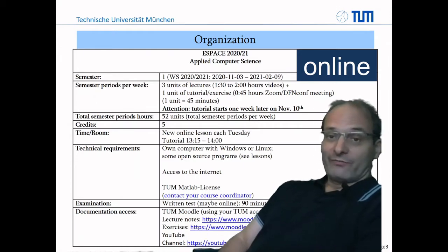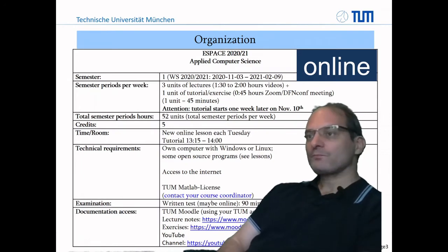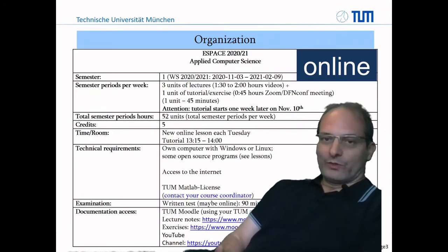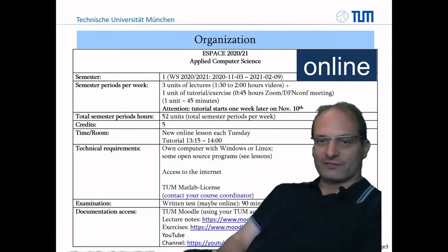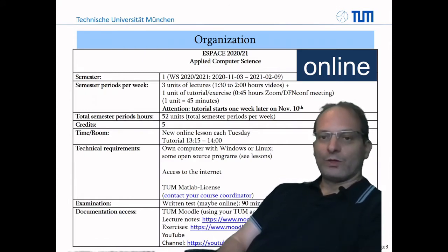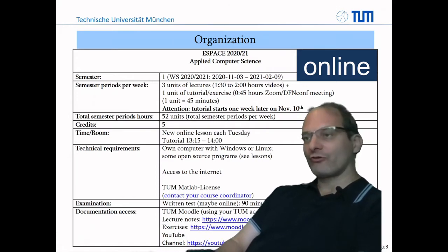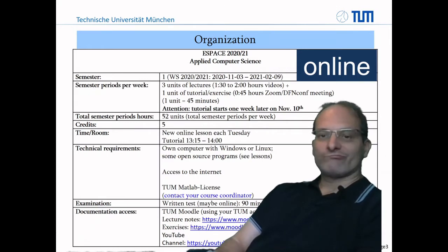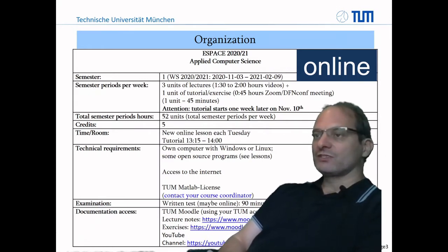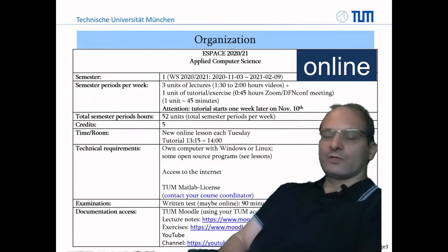This is only for the 3M students — specific for people who will do the exam. The tutorial will start one week later. You will get the tasks for the exercises on the day the lesson is published, then you have one week to prepare everything and go into the tutorial to hear about solutions. In total we will have 52 units of 54 minutes each and you will get five credits for that.